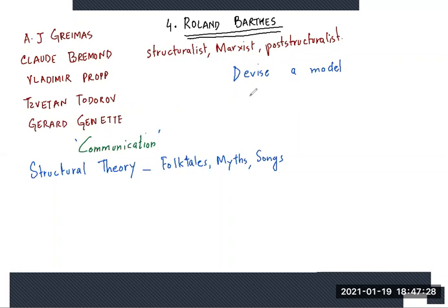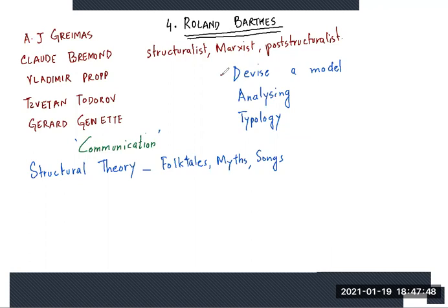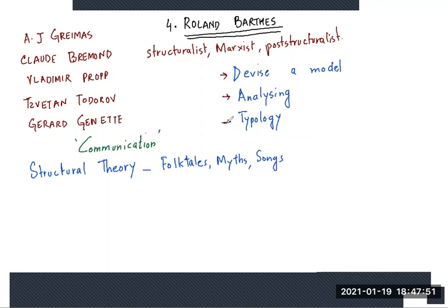These models would help them in analyzing signifying elements in a literary text. And the view would be to construct a typology. They tried to devise a model that would help them analyze various different literary texts. And through this study, they were trying to find out if there is a particular typology that can be constructed to study every text.